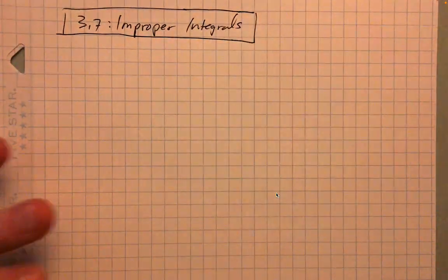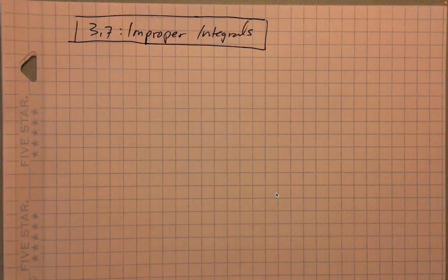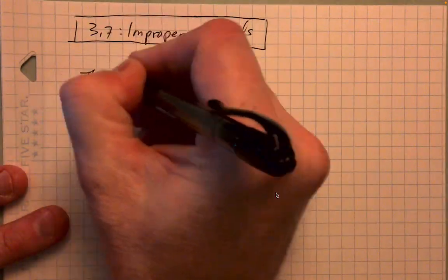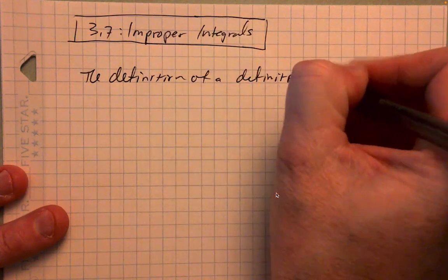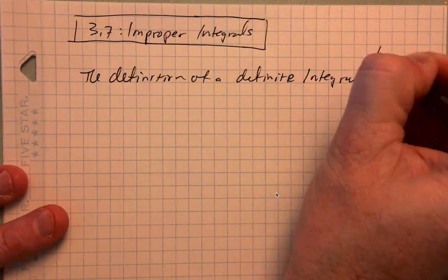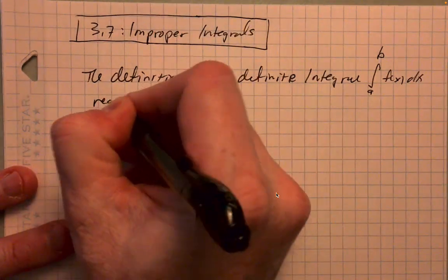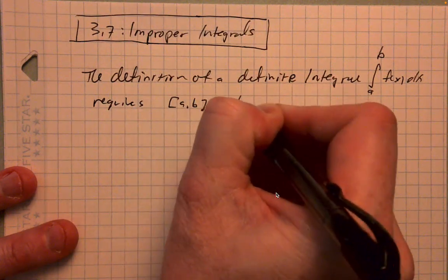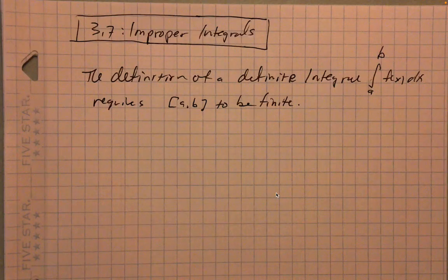So when we say the word improper, what do we mean? We just mean kind of unusual. These do technically fall outside of what we would call an integral typically. The definition of a definite integral — from a to b of f(x) dx — requires the interval [a, b] to be finite. So a and b are assumed to be finite numbers when we're talking about a definite integral.